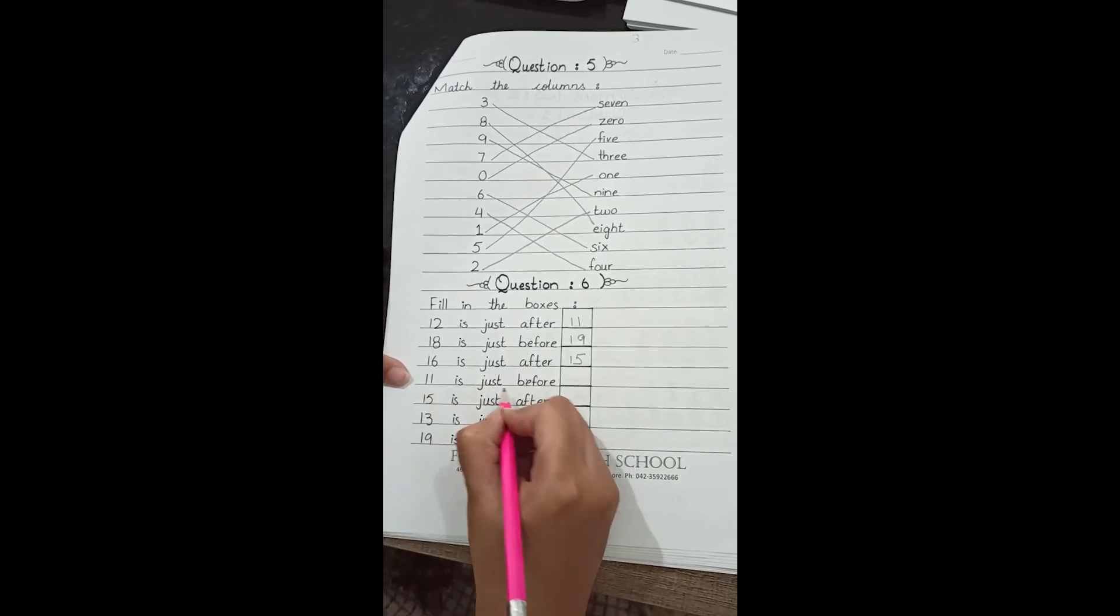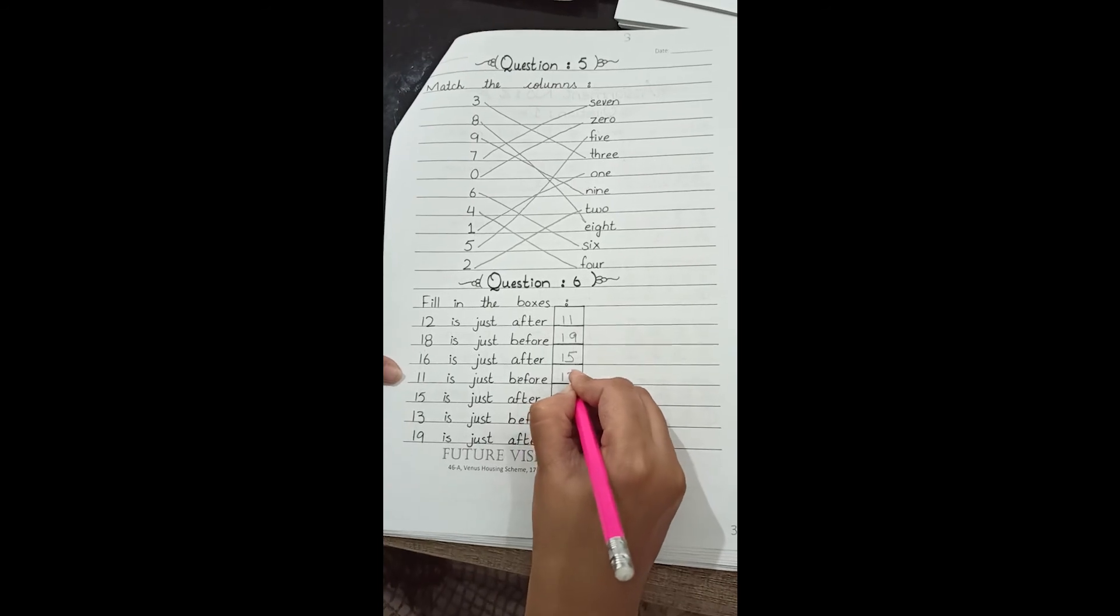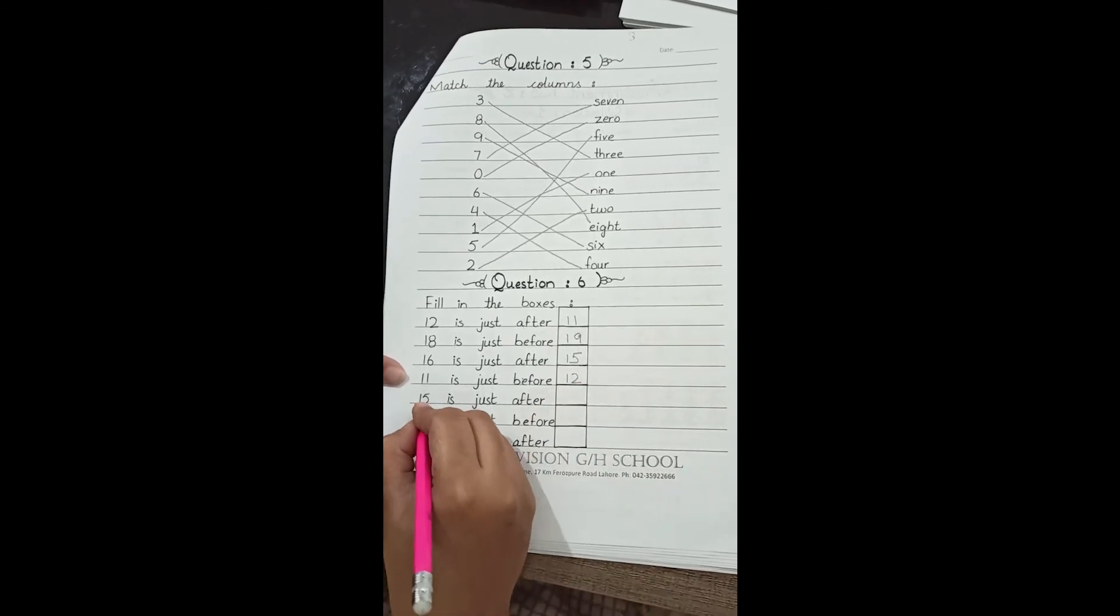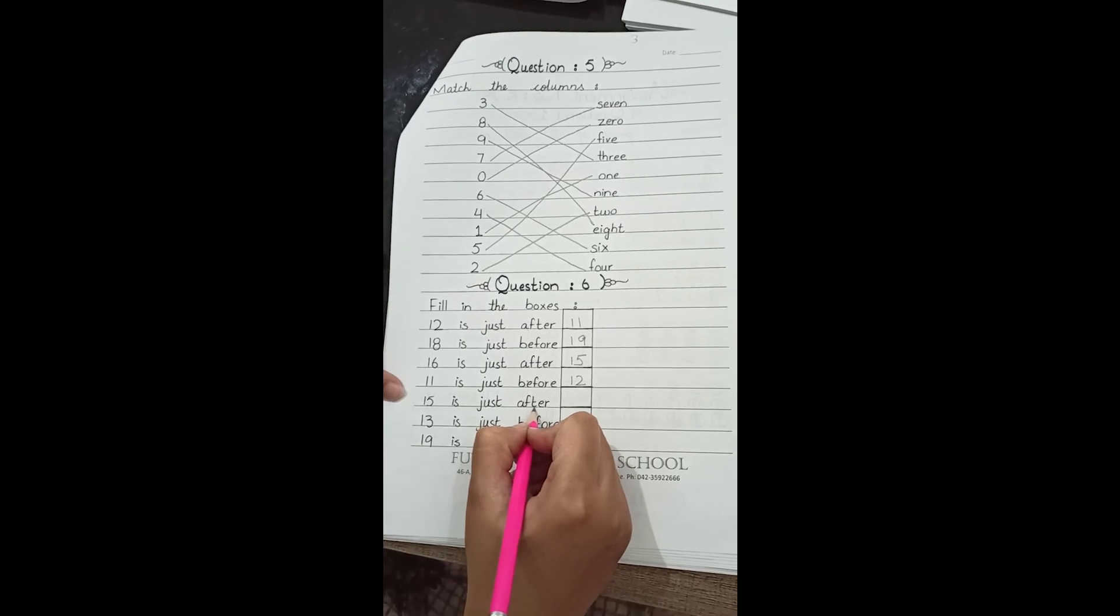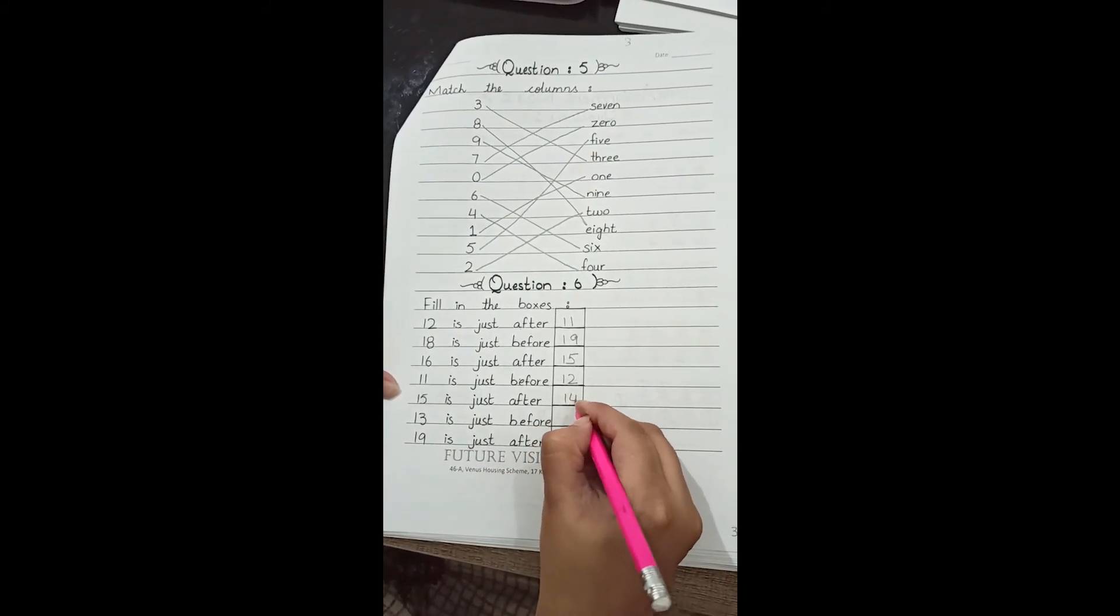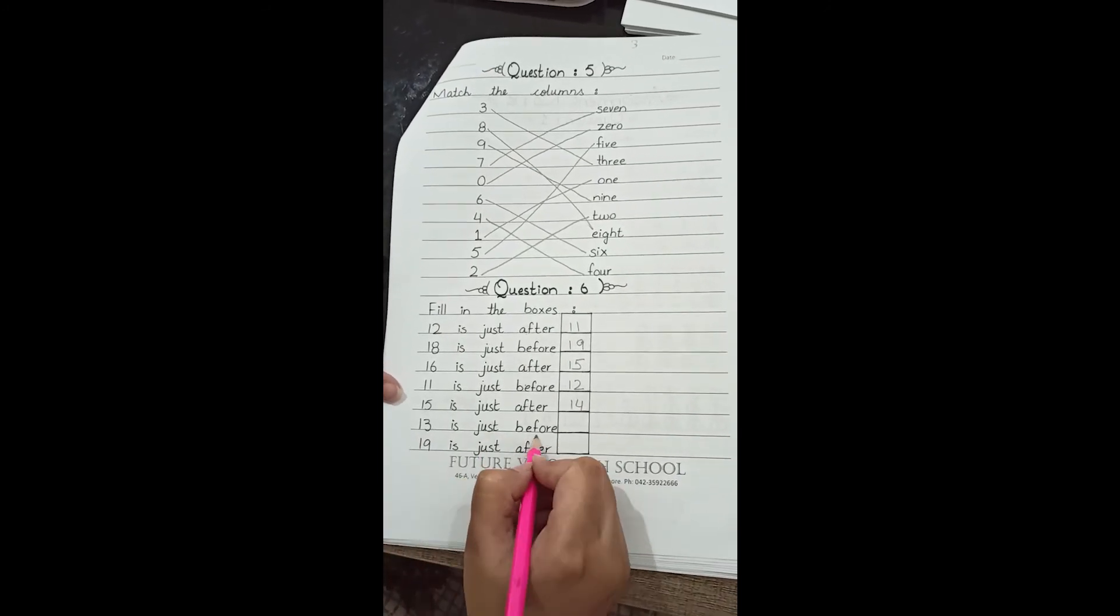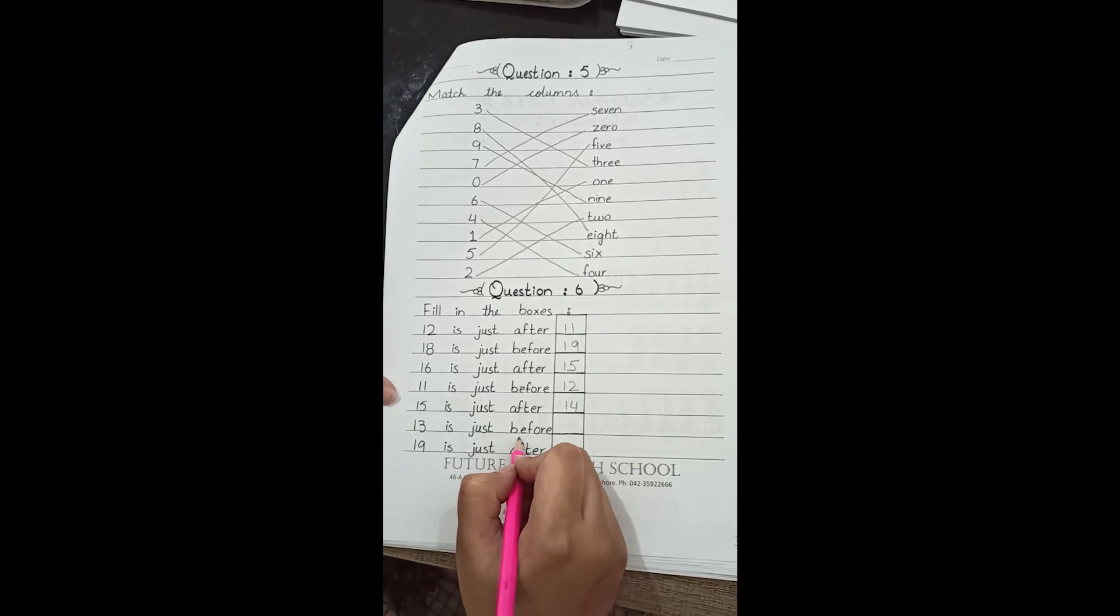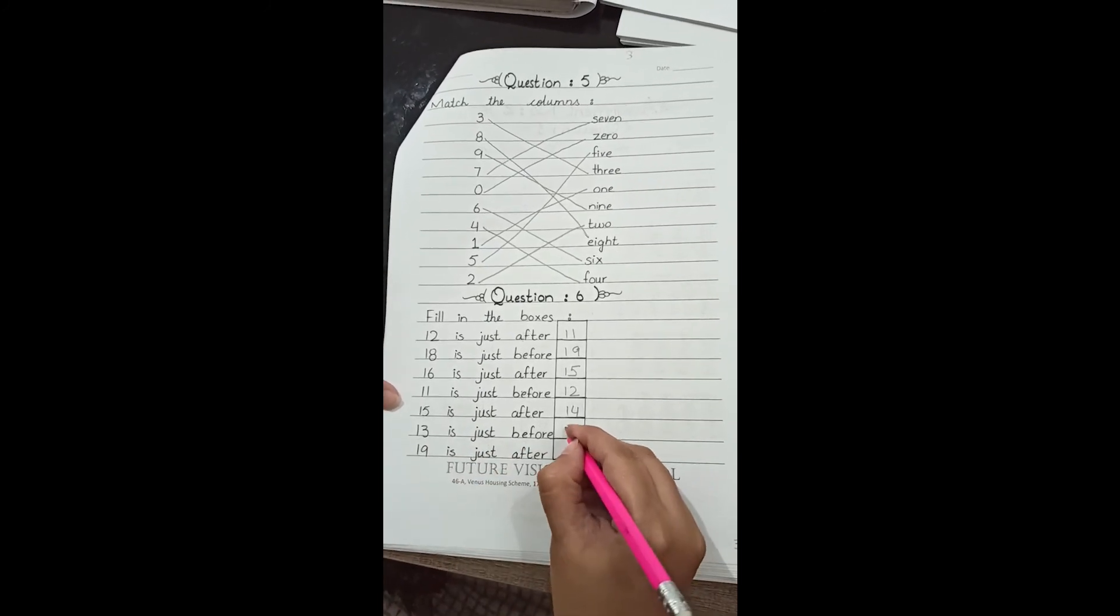11 is just before what? 11 is just before 12. 15 is just after 14. Very good students. 13 is just before what? 13 is just before 14.